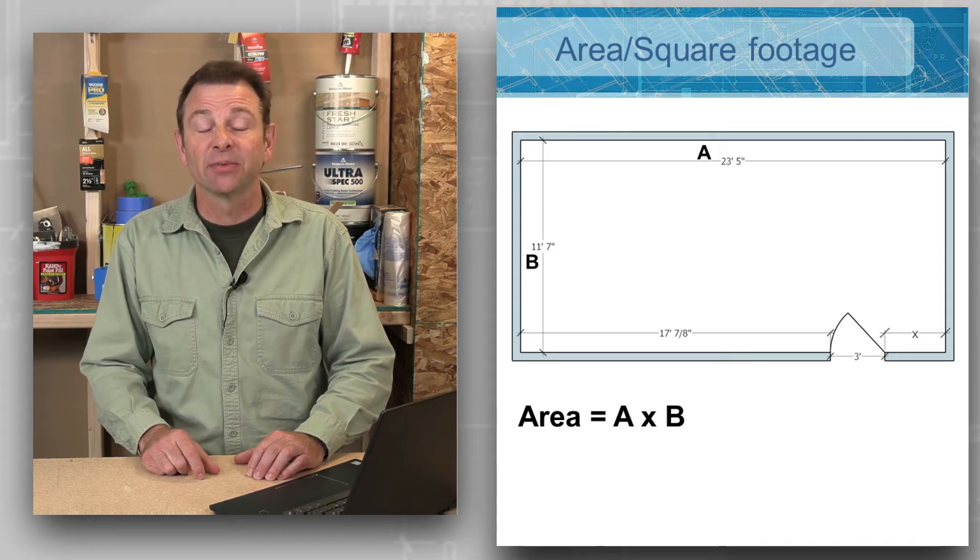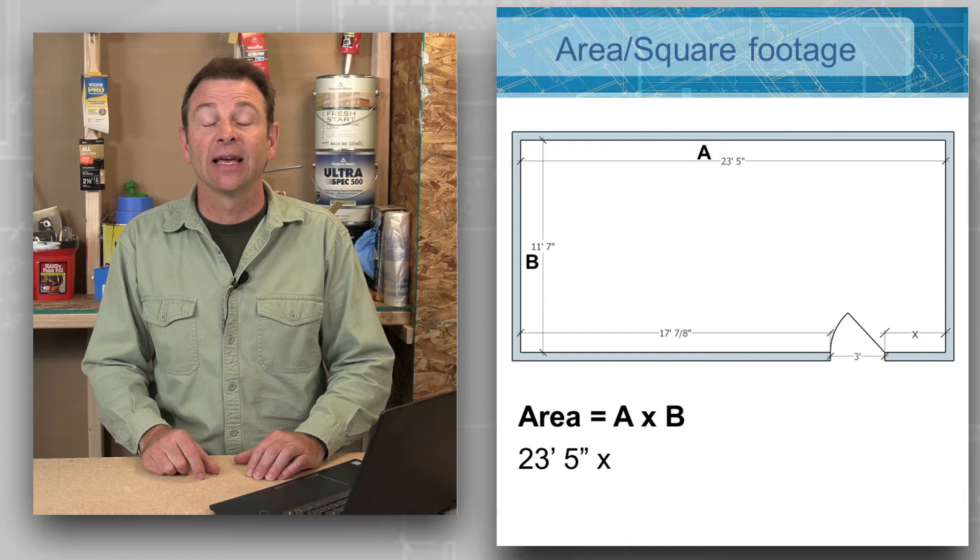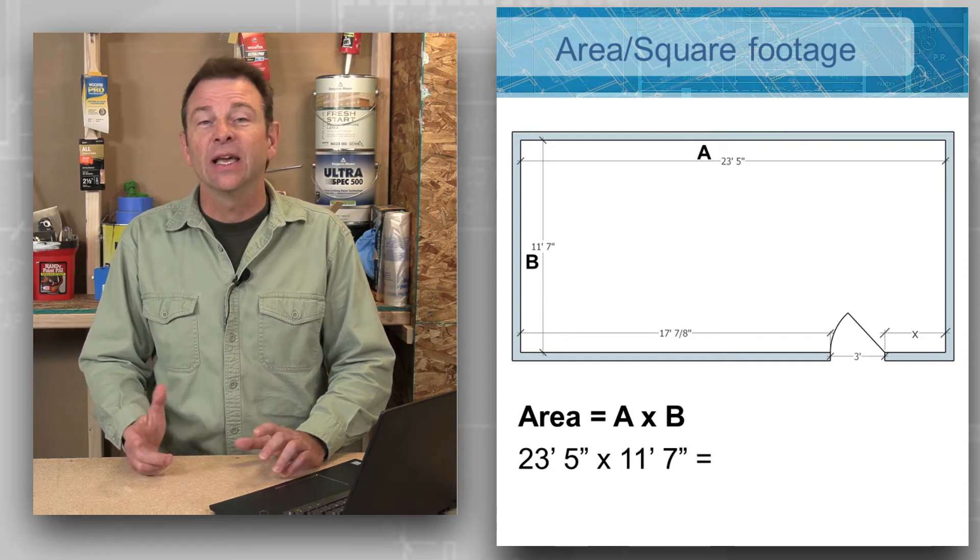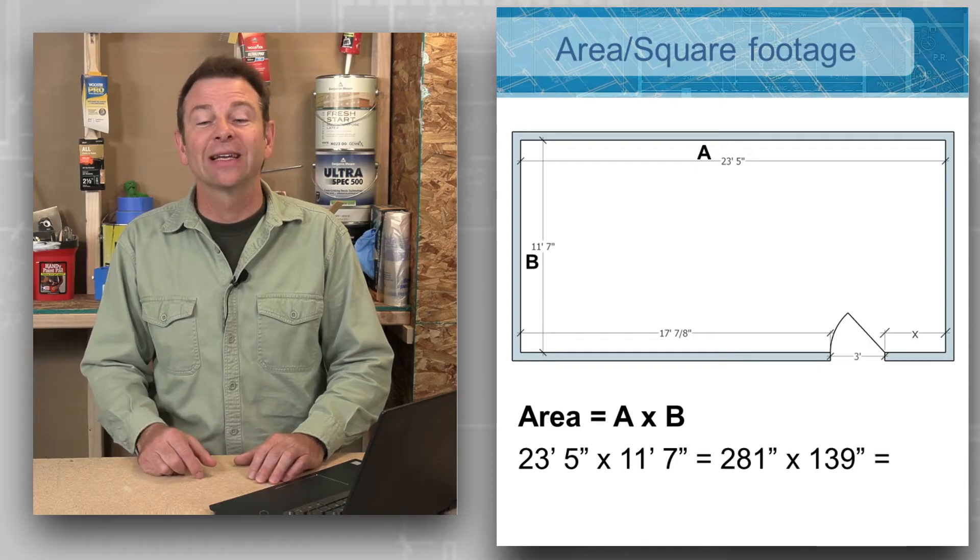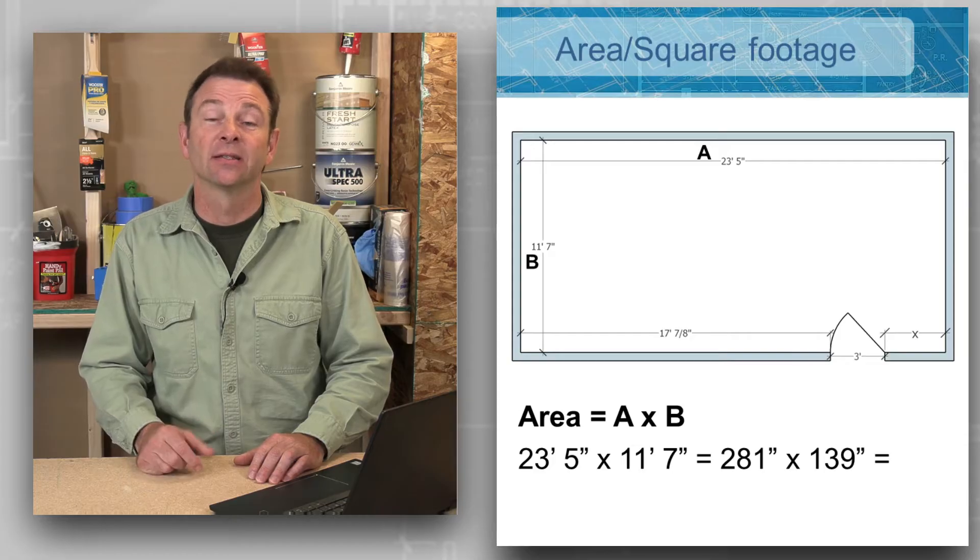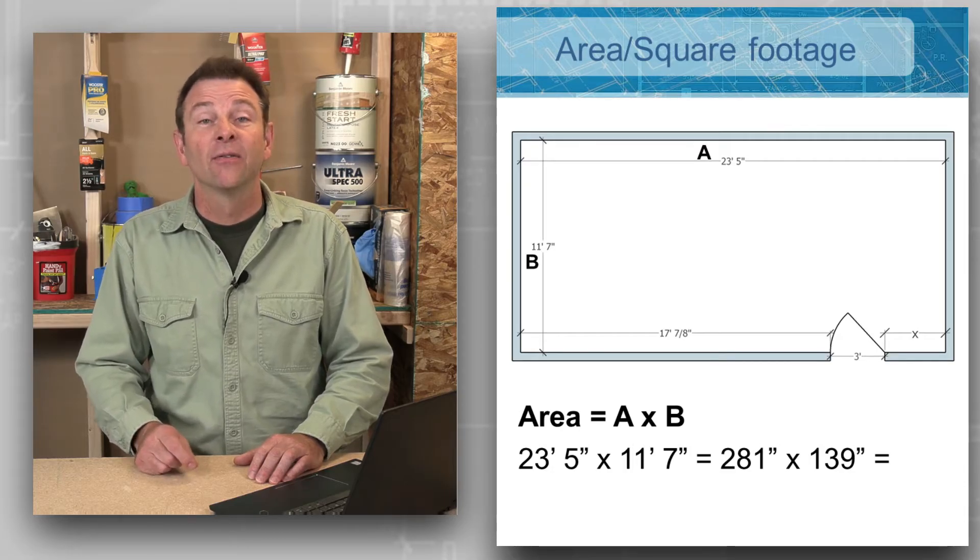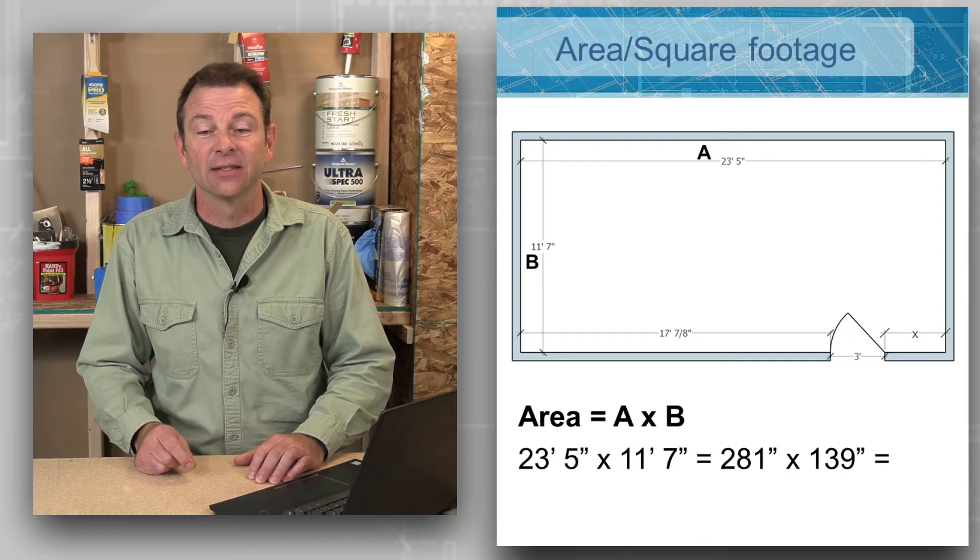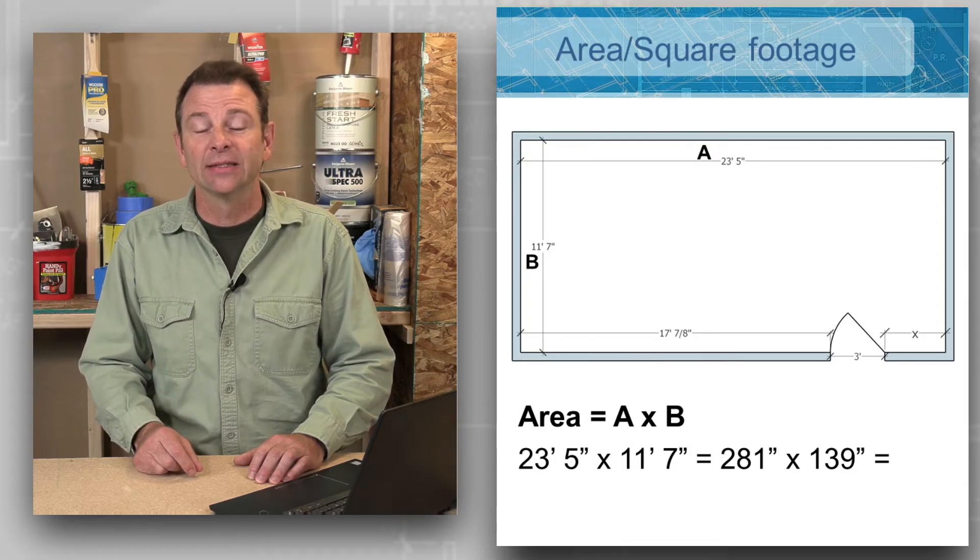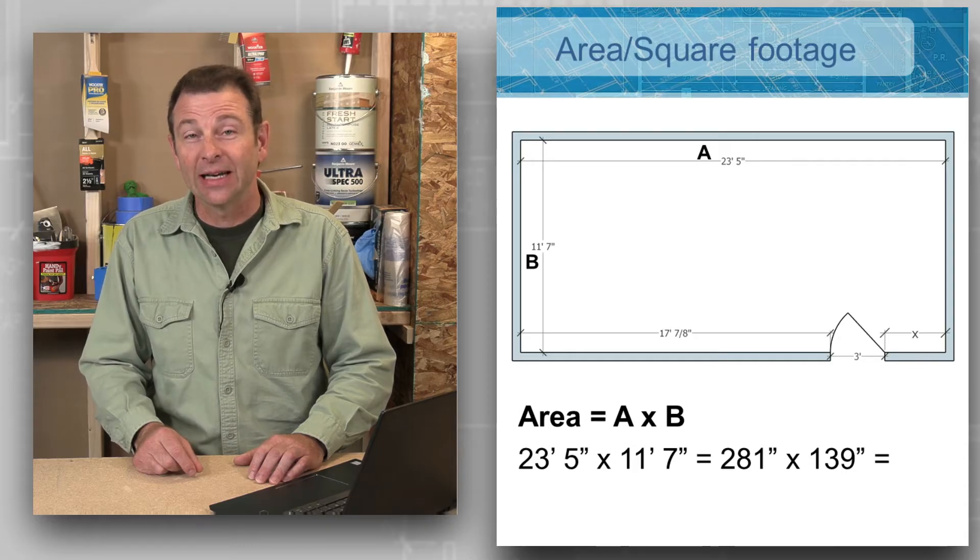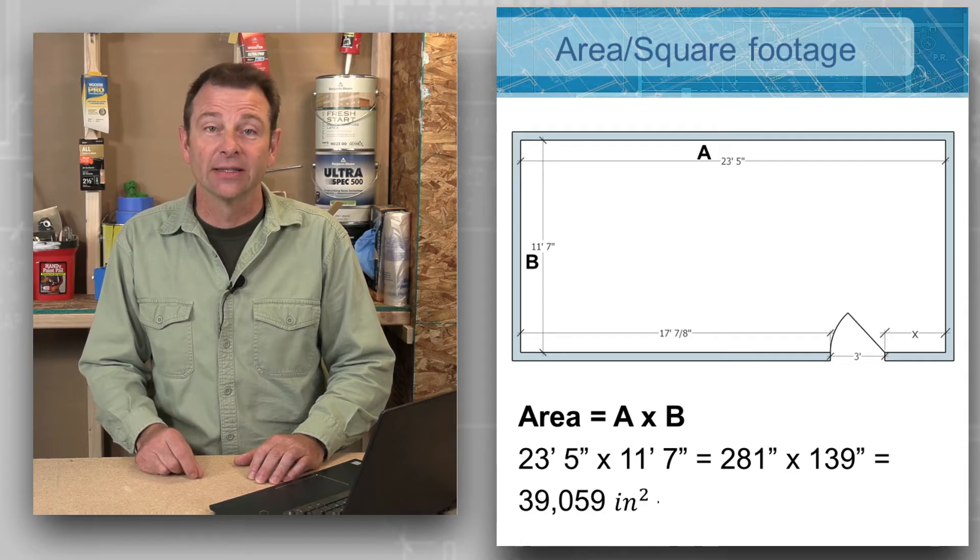One measurement, measurement A, is going to be 23 feet 5 inches, and we're going to multiply that times 11 feet 7 inches. If we convert both of these measurements to inches only, we're going to get 281 inches for our 23 feet 5 inches and 139 inches for our 11 feet 7 inches. We can then multiply those two numbers together. So 281 inches times 139 inches is going to be 39,059 square inches.